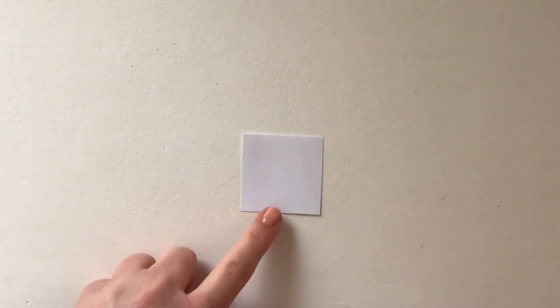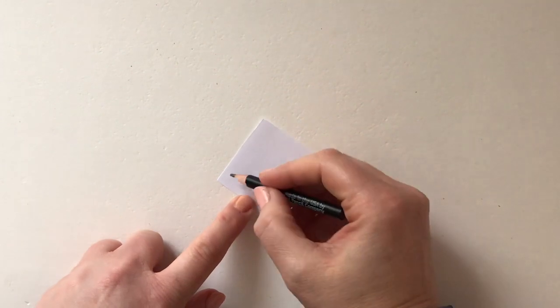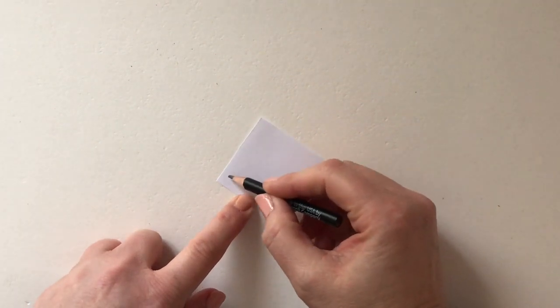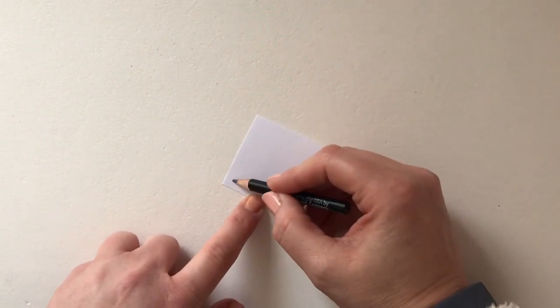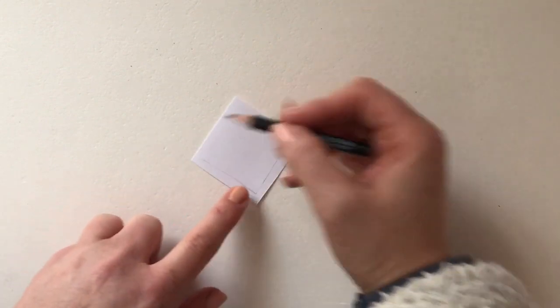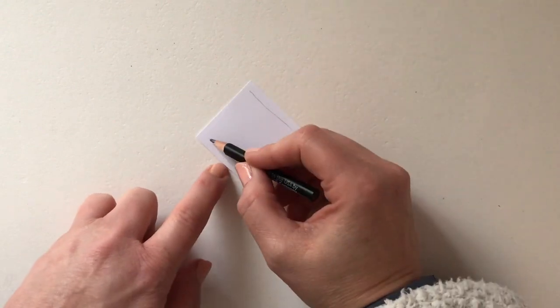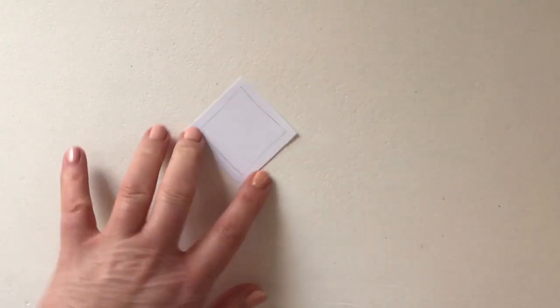We're going to start off using the pencil, and like we did in the session yesterday, we're just going to draw a line to form a border around the inside of each side of the square. You'll notice that I didn't use a ruler, you don't need to, it doesn't matter, it doesn't have to be perfectly straight.